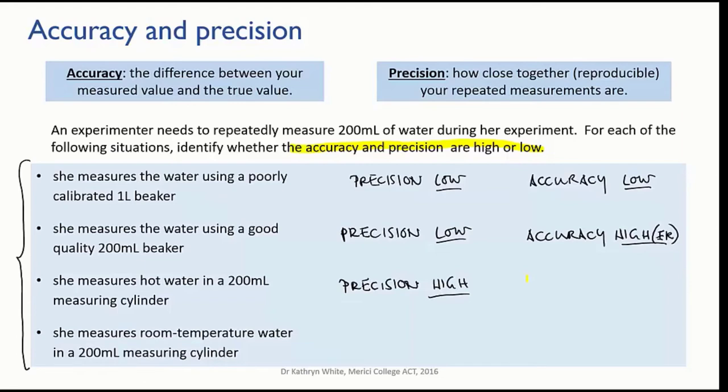Every time she measures out 200 mils of hot water and then lets it cool down, she'll actually have a smaller volume than she thought, and this will cause a systematic error. All of her volumes will be smaller than she had thought, so her accuracy will be low.